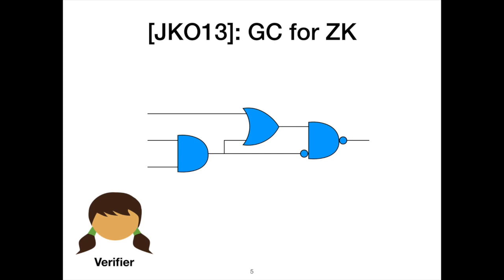In the JKO paradigm, the garbled circuit generator is the proof verifier. The generator's core purpose is to construct an encryption of the circuit that will be sent to the prover. The prover will then run this circuit under encryption. The key idea is that only if the prover has a satisfying input to the proof statement will the prover be able to produce a label encoding a logical one — and hence, successfully outputting a valid label for one constitutes a zero-knowledge proof.